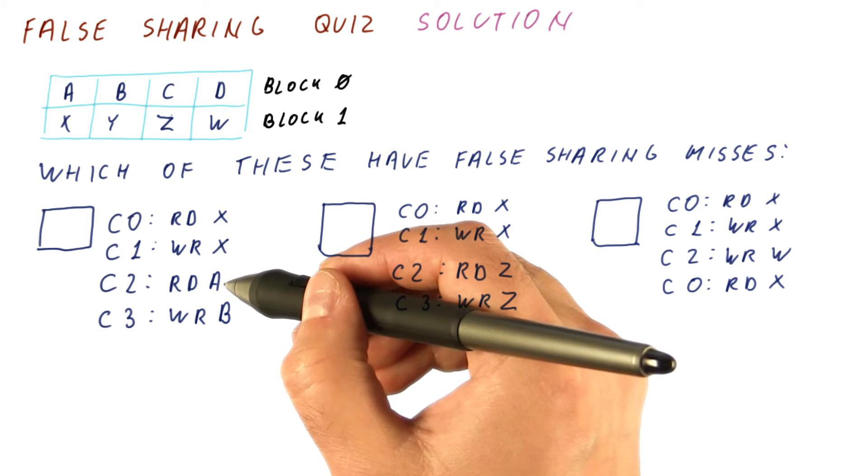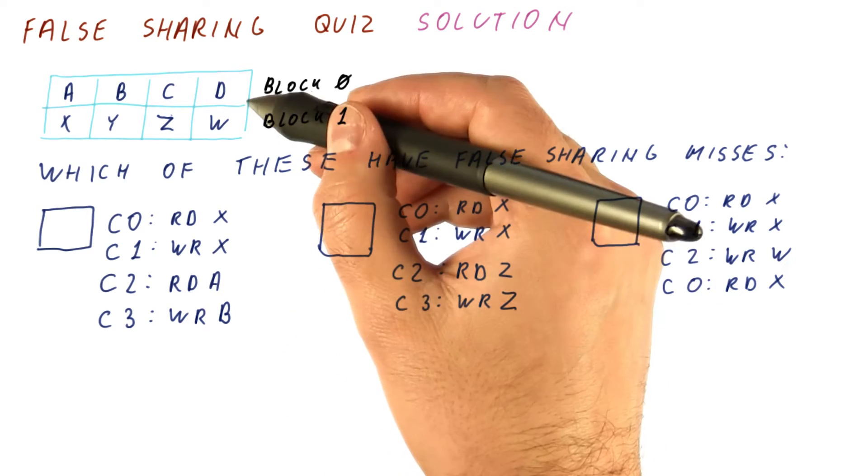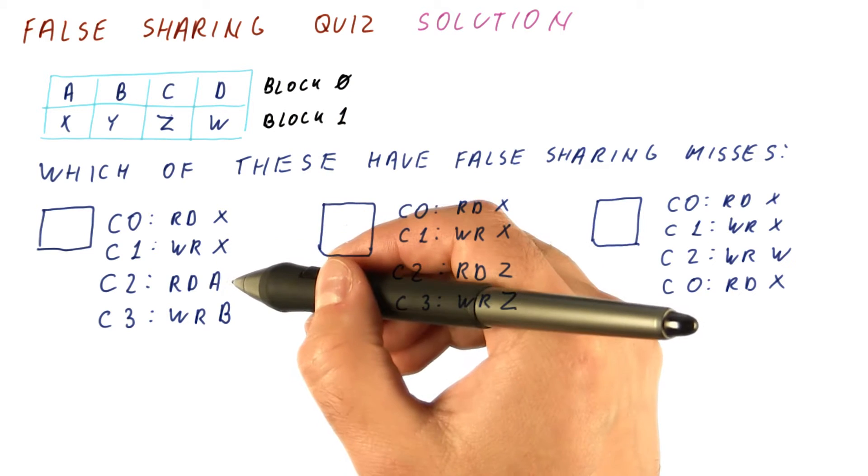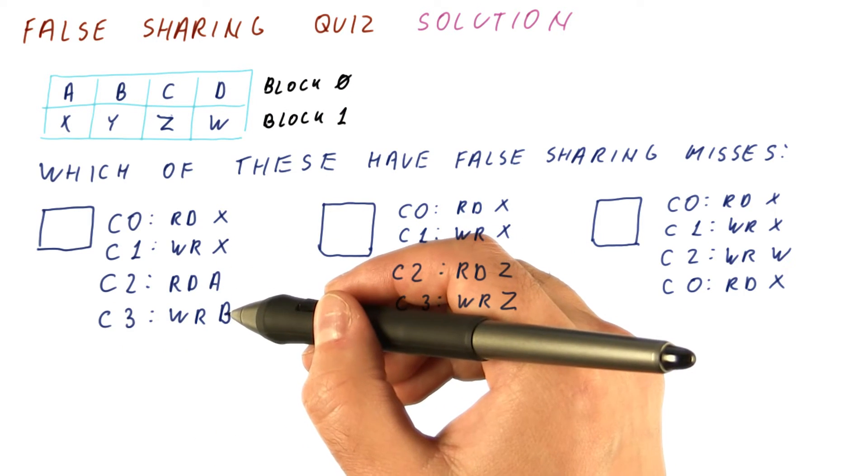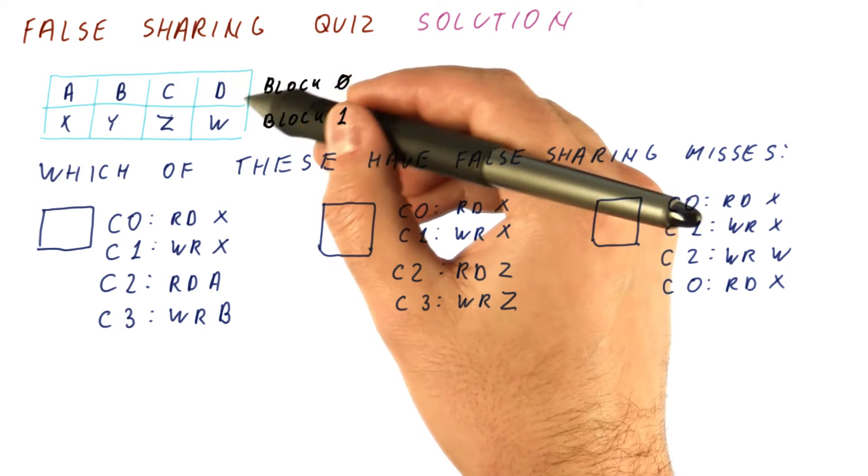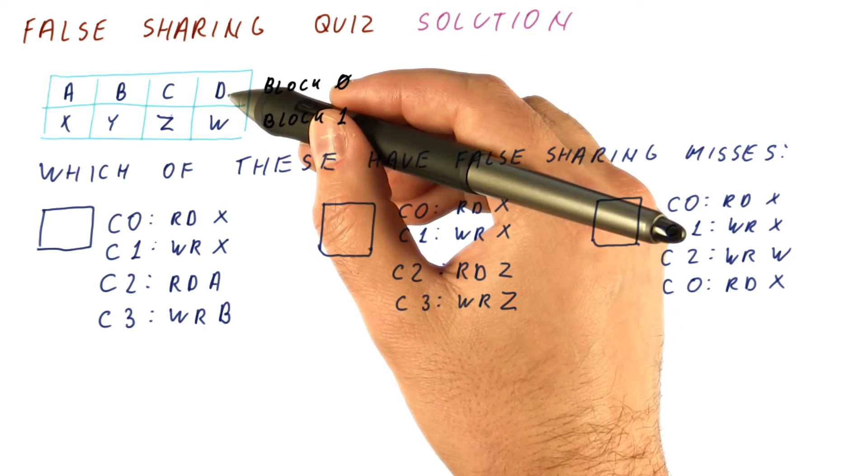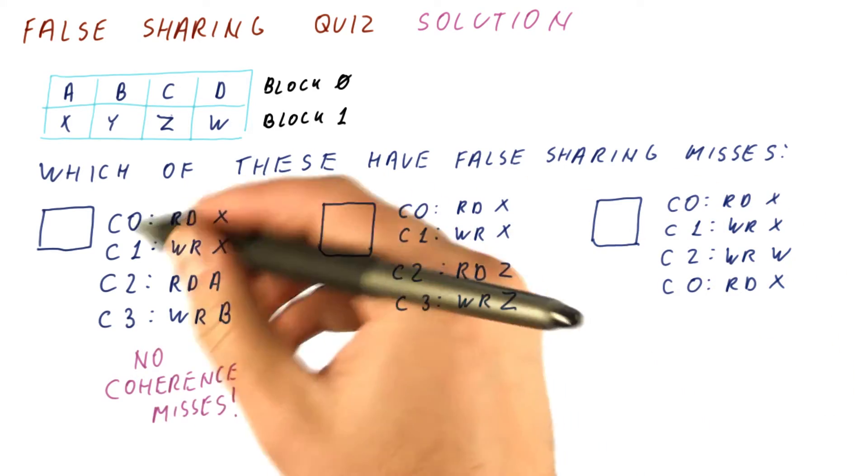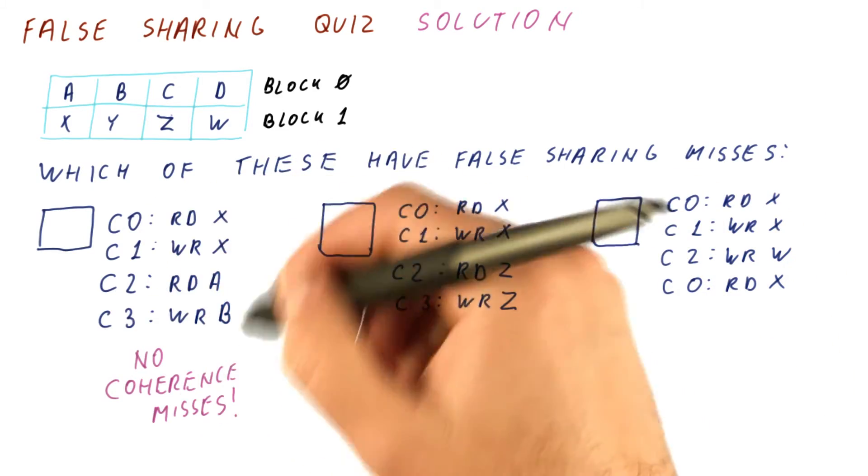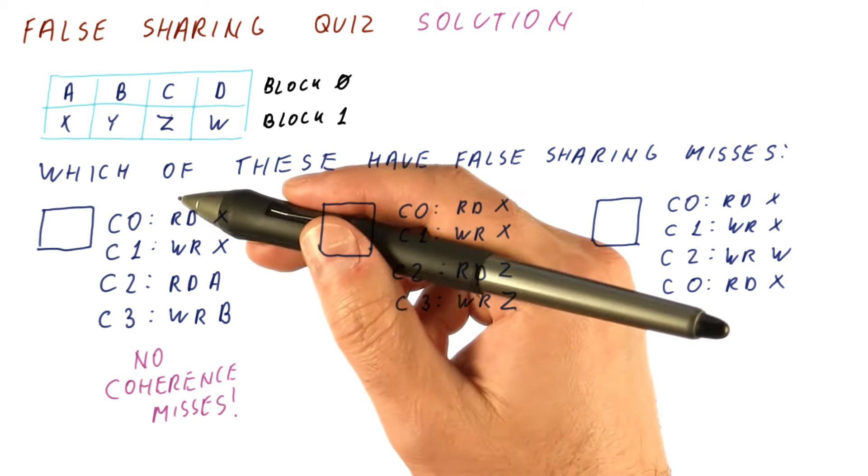Read A here is also a compulsory miss. This block wasn't in C2's cache. Finally, C3 is writing to B. This block wasn't in C3's cache, so this is also a compulsory miss. So in fact, this sequence has no coherence misses whatsoever. All of them are compulsory misses.